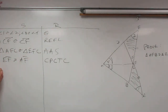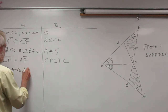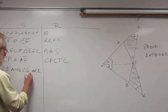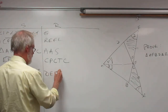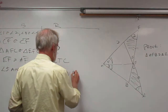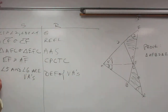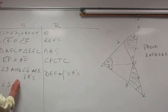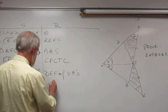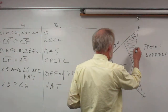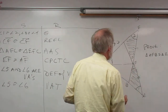Step five: angle 5 and angle 6 are vertical angles — that's the definition of vertical angles. Step six: angle 5 is congruent to angle 6, and the reason is the Vertical Angles Theorem. Now I can mark this one congruent to this one.